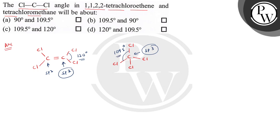So respectively, in 1,1,2,2-tetrachloroethane and tetrachloromethane, the bond angle will be 120 degrees and 109.5 degrees. So the correct option is D. I hope you understood. Good luck, best wishes!